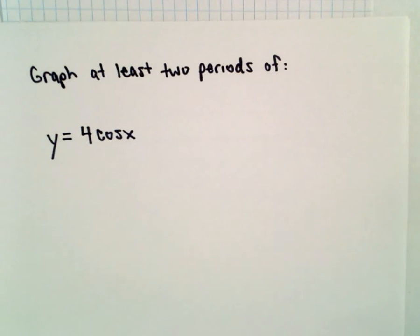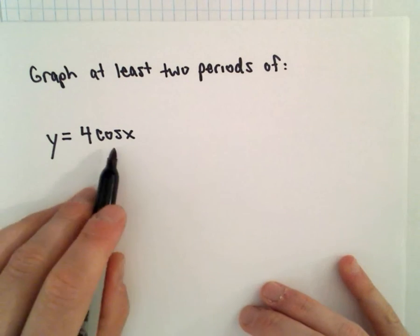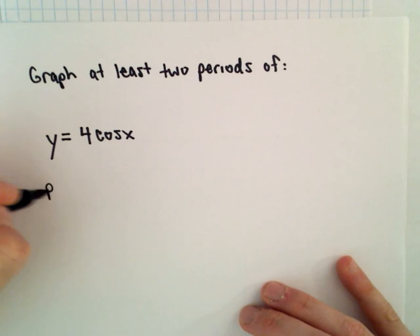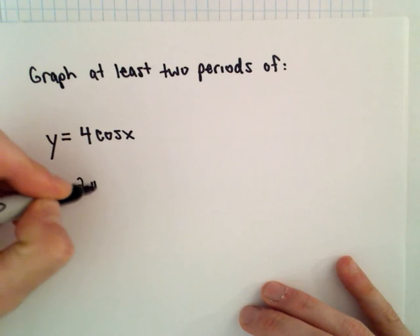Okay, here we're going to graph two periods of the function y equals four times cosine x, and the period for cosine x is equal to two pi.